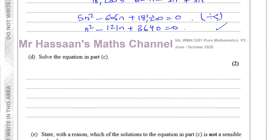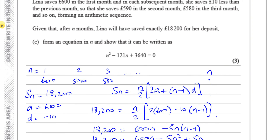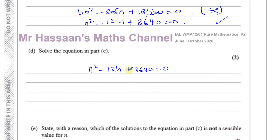Moving on to part D, it says solve the equation from part C: N squared minus 121N plus 3640 equals 0. This N represents the number of months it takes for her to save exactly 18,200 for her deposit. This is a quadratic equation. Factorizing might be a hassle with these numbers, so I would personally use the quadratic formula here.